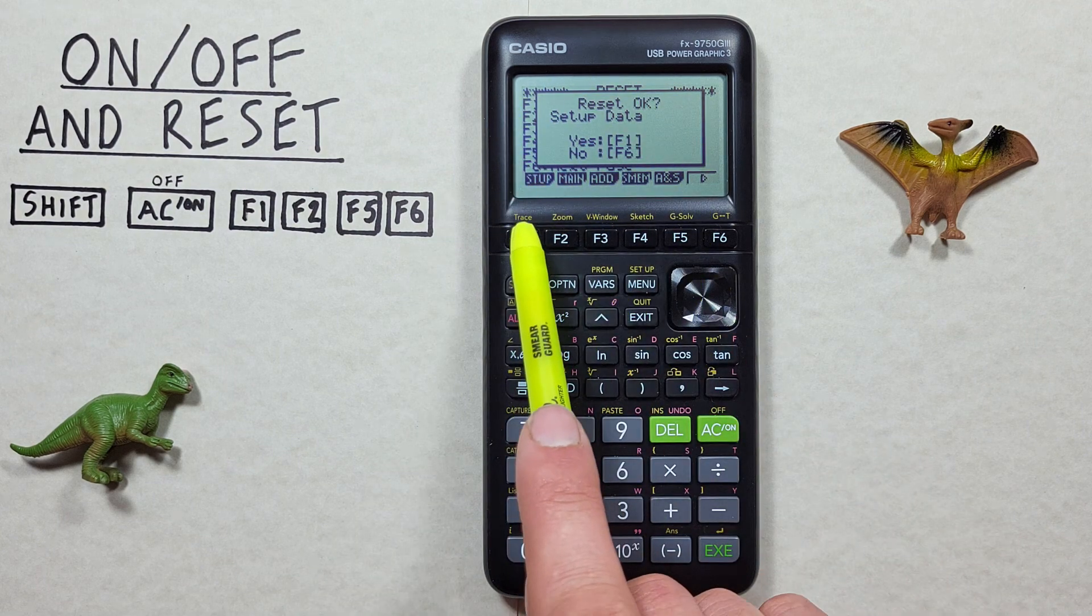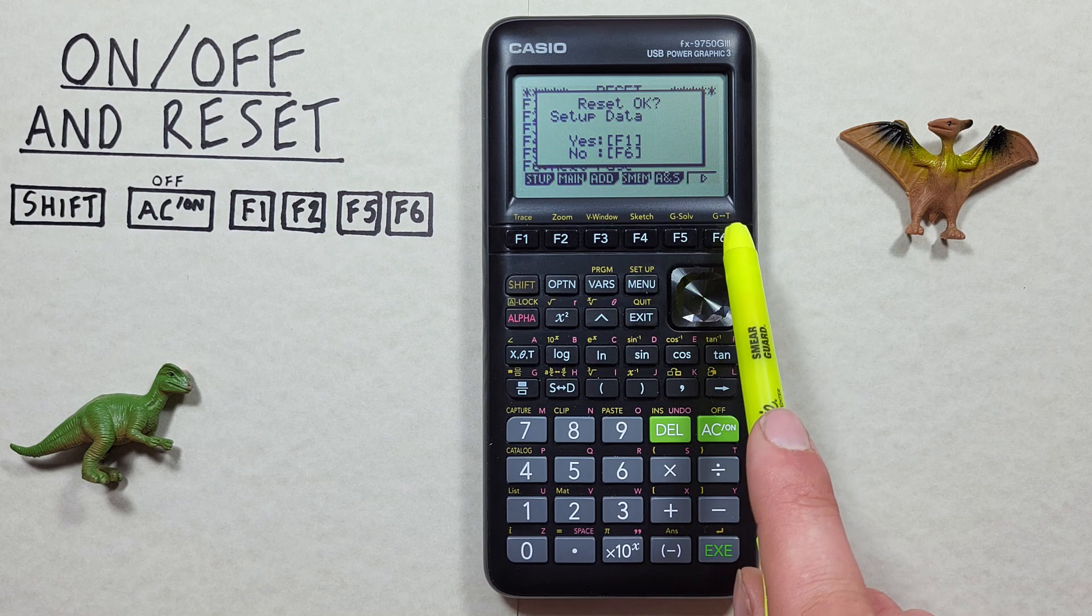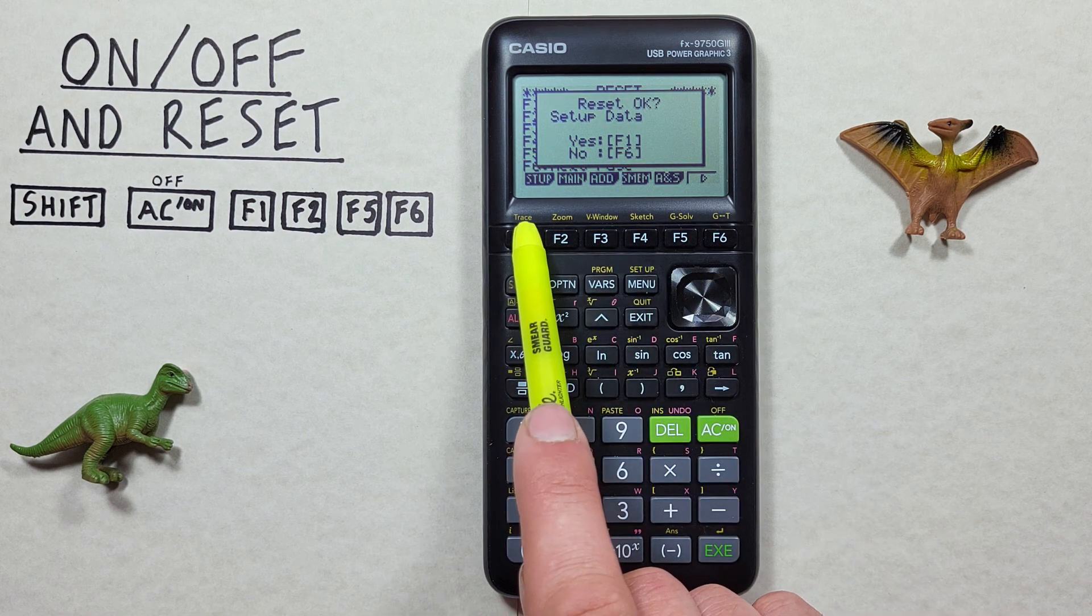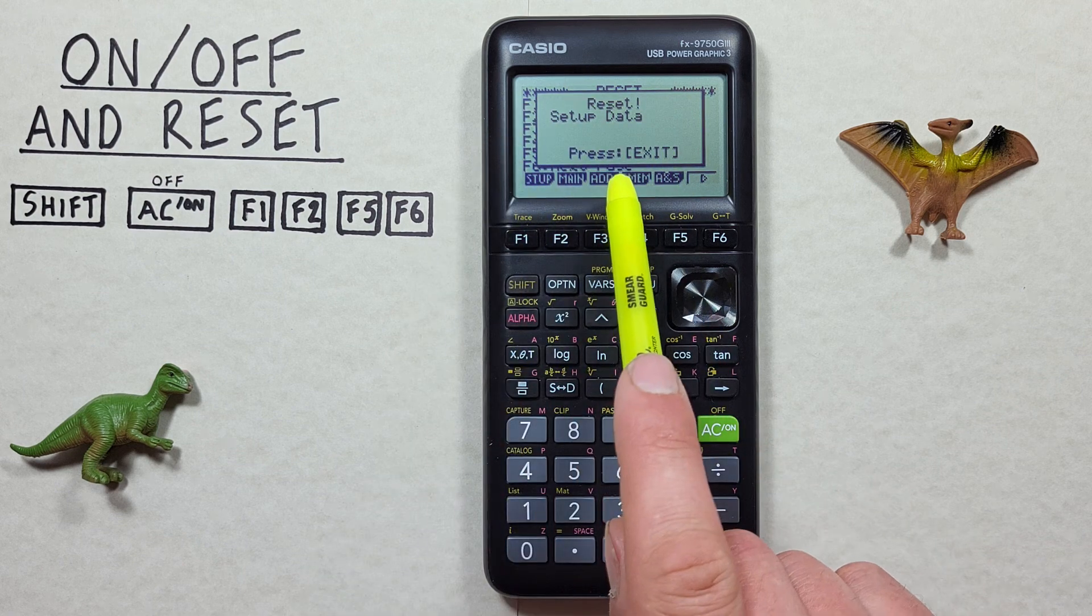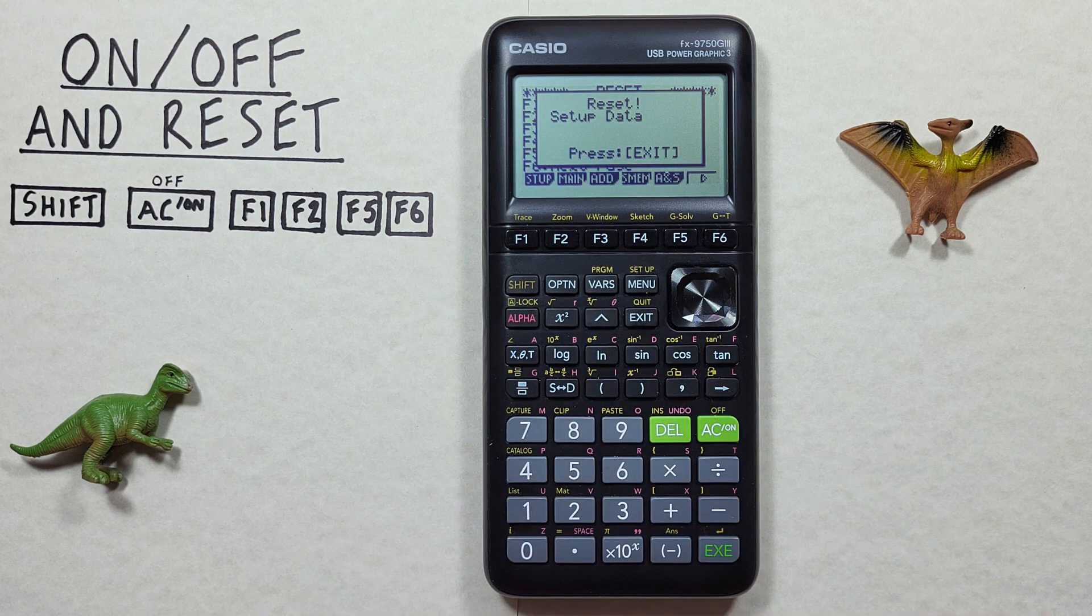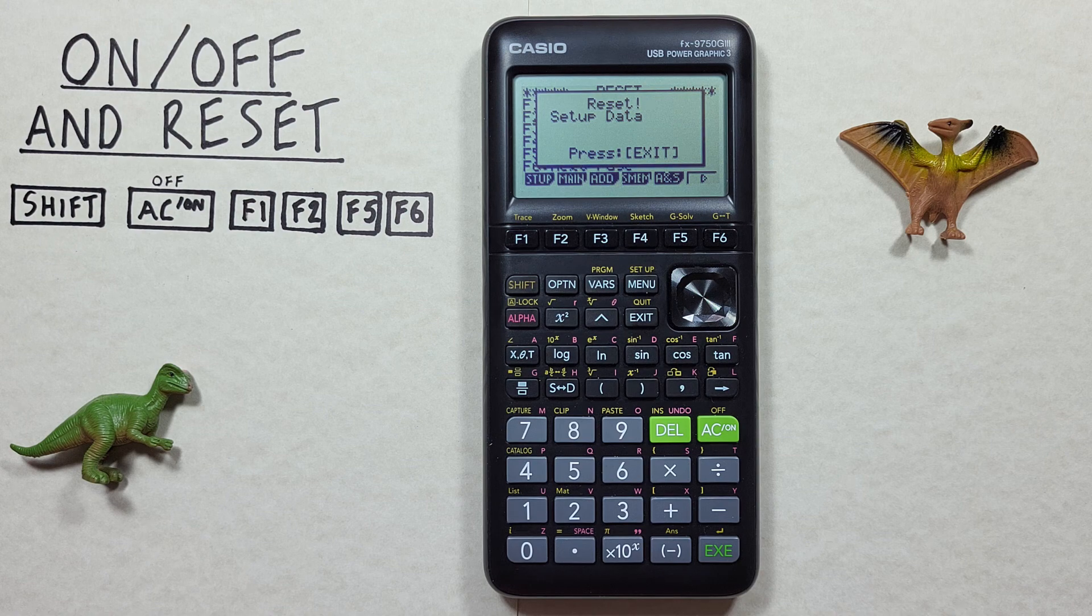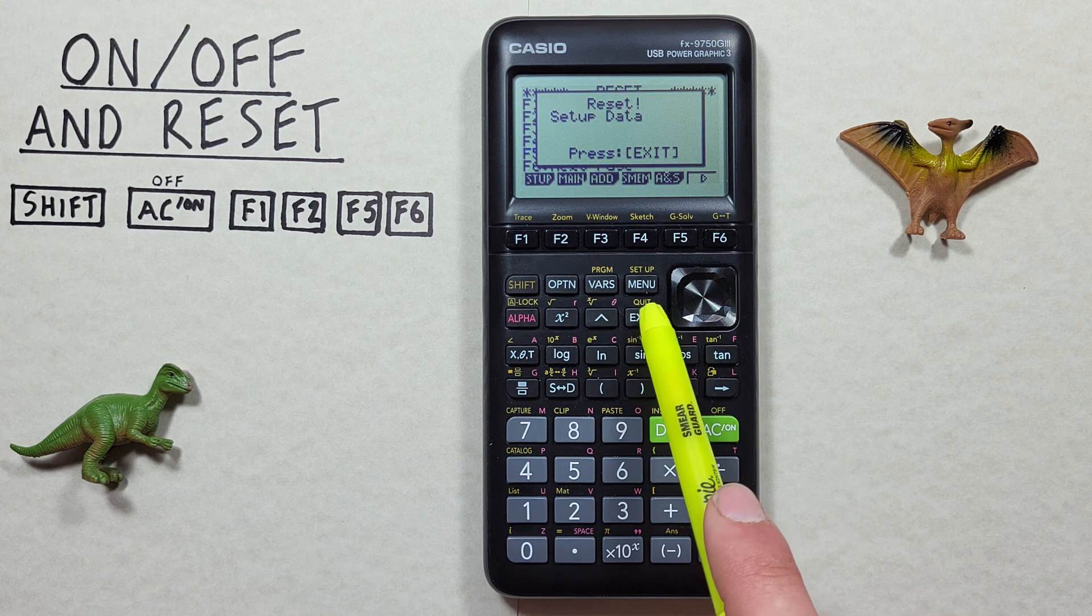F1 means yes, F6 means no. Since we want to confirm yes, we'll press F1 and it says reset. Our setup data has been reset to the default and our problem should be solved. We can exit out of the screen with the exit key.